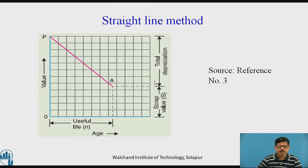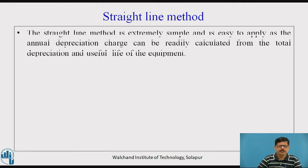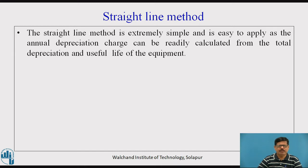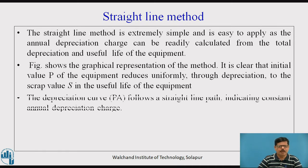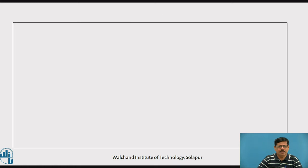The straight line method is extremely simple and easy to apply, as the annual depreciation charge can be readily calculated from the total depreciation and useful life of the equipment. As seen in the graphical representation, the initial value of the equipment reduces uniformly through depreciation to the scrap value over the useful life, and the depreciation curve P to A follows a straight line path indicating the constant annual depreciation charge.